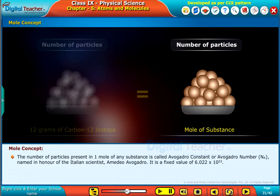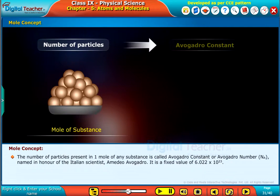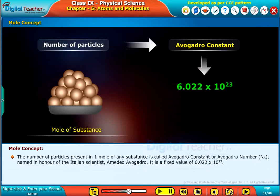The number of particles present in one mole of any substance is called Avogadro Constant or Avogadro Number (NA), named in honor of the Italian scientist Amedeo Avogadro. It is a fixed value of 6.022 x 10^23.